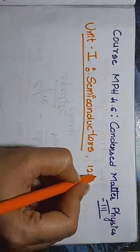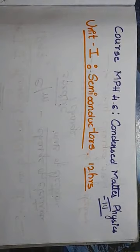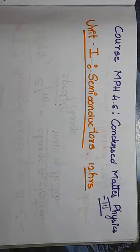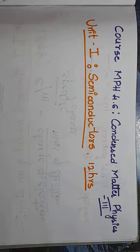It is a 12-hour syllabus. In this chapter we are going to study elemental and compound semiconductors, band structure of real semiconductors, and intrinsic semiconductors — including the expression for carrier concentration and Fermi energy. We will also study extrinsic semiconductors: carrier concentration expressions for n-type and p-type separately, and Fermi energy in n-type and p-type semiconductors. Before beginning the unit, we should understand the basic question: what is a semiconductor?